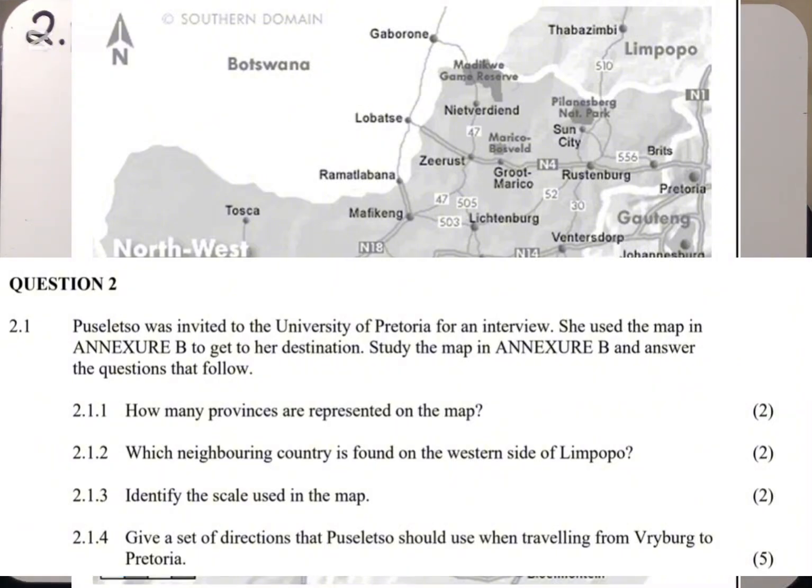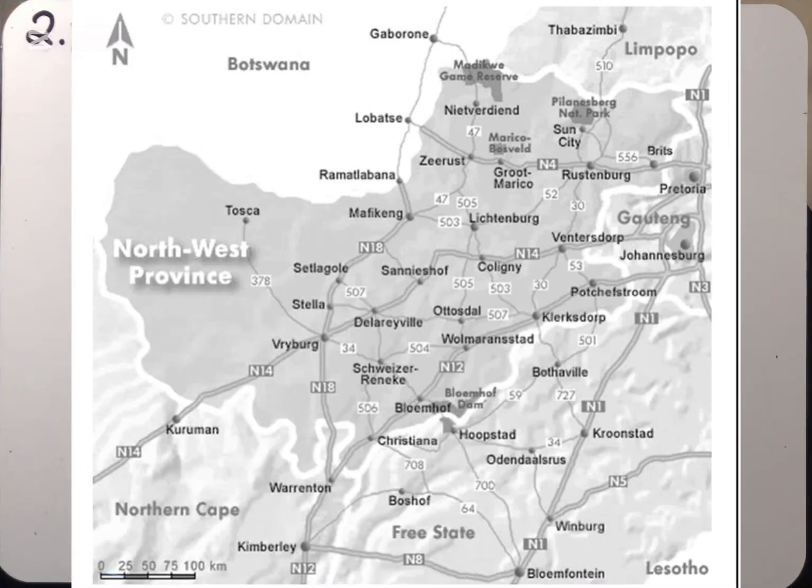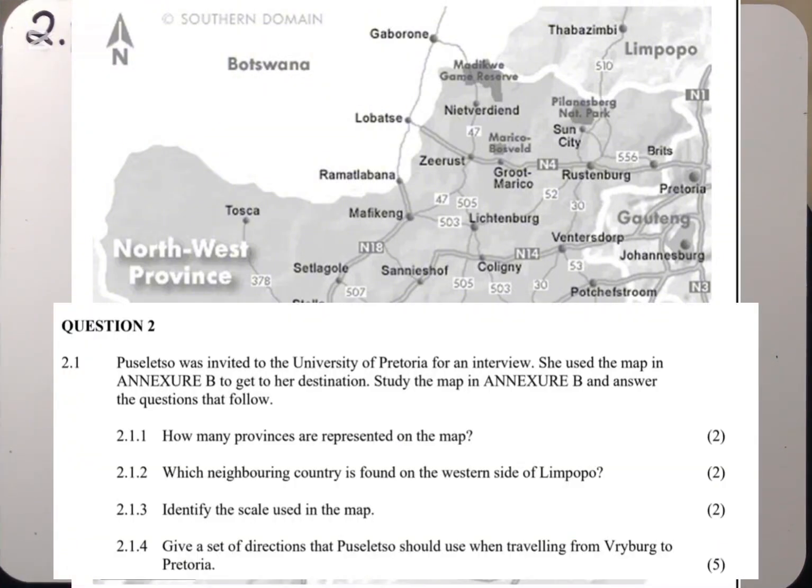She used the map in Annexure B to get to her destination. Study the map in Annexure B and answer the questions that follow. When we look at this map in Annexure B, we can see Botswana, Limpopo, Gauteng, Lesotho, Free State, Northern Cape and Northwest Province, and other small cities like Gauteng, Pretoria, Brits, Rustenburg and many more.